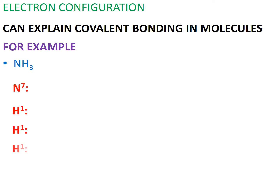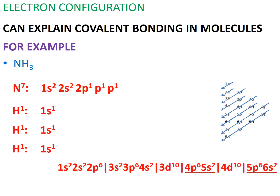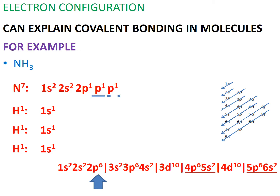We also need to remember the order of orbitals in which their electrons can fill. In the case of nitrogen, it has seven electrons: two in the sole 1s orbital, two in the sole 2s orbital. Then, using Hund's rule, the remaining three electrons have to singly occupy 2p's three orbitals — p1, p2, and p3.